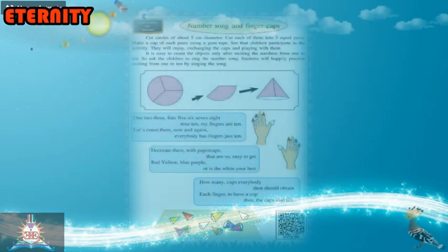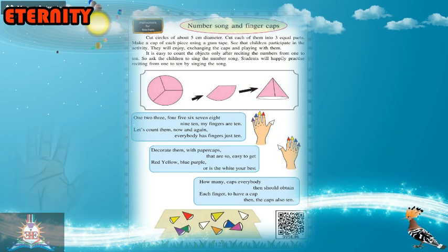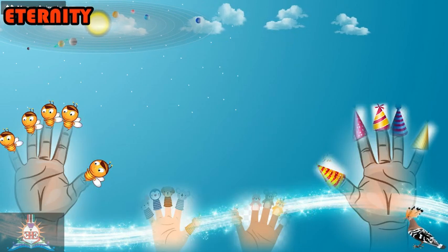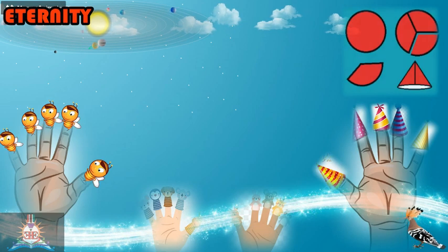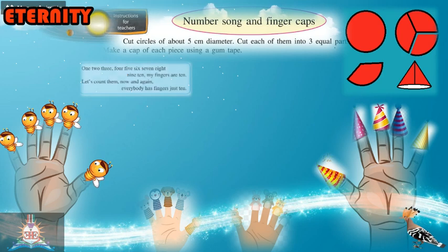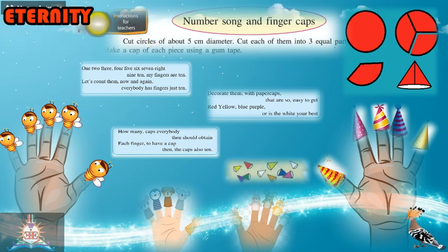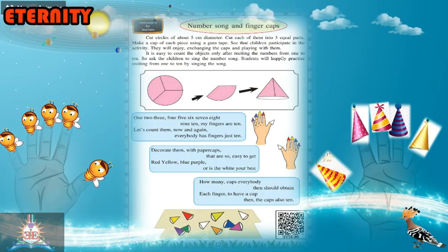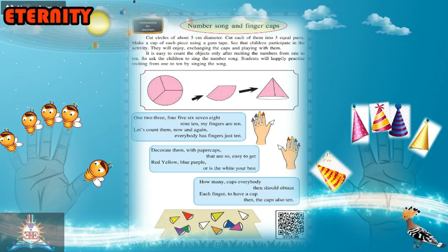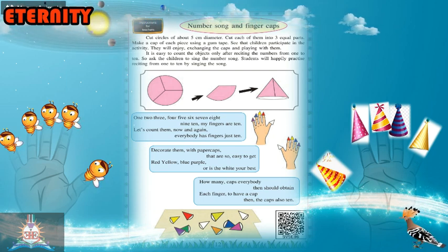Number song and finger caps. See the picture — how do you cut circles of about 5 cm diameter? Take a 5 cm diameter circle and cut each of them into 3 equal parts. Then make a cap of each piece using gum tape — stick each separate piece with gum tape to make a cap.